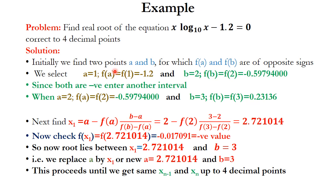Here we will see an example for the Regula Falsi method: find the real root of the equation x·log(x) − 1.2 = 0, correct to 4 decimal places. Initially, we find two points a and b for which f(a) and f(b) are of opposite signs.